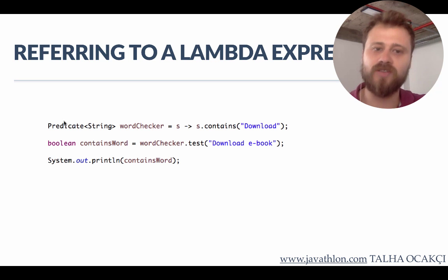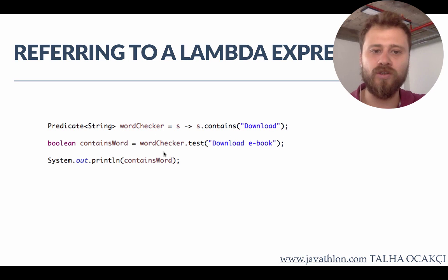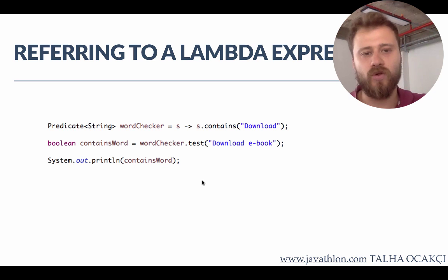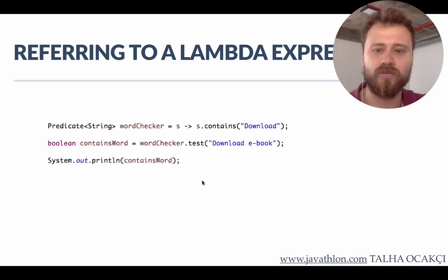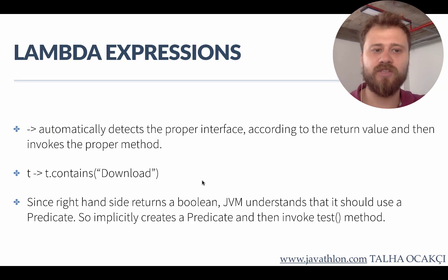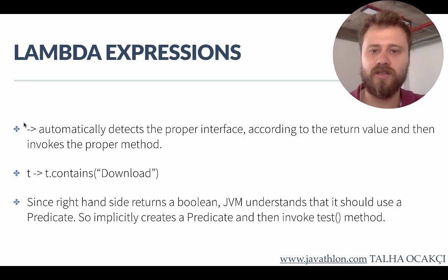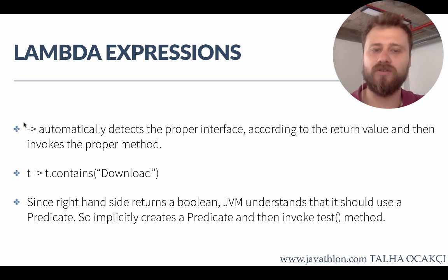JVM is intelligent enough to resolve this. After referring this predicate, you may use this reference as an ordinary predicate — you may directly invoke the test method with the input that will be tested. The lambda expression automatically detects the proper interface according to the return value, and invokes the proper method if needed.